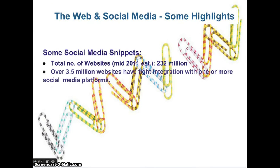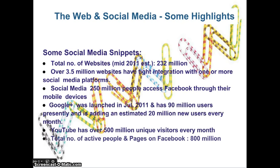Here are some facts about social media. As of about the middle of last year, the total number of websites was estimated to be over 230 million. Mobile access for social media is on the increase, and it was estimated that over 250 million people alone access Facebook through various mobile devices. YouTube has over 500 million unique visitors every month. Twitter is counting at over 300 million users. Google+, which was launched in July 2011, has over 100 million users and is adding an estimated 20 million new users every month. The total number of active people and pages on Facebook is 840 million at the last count.